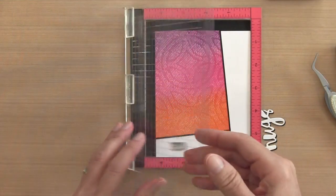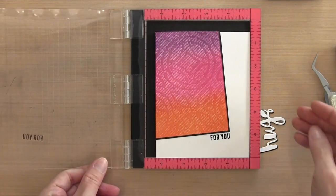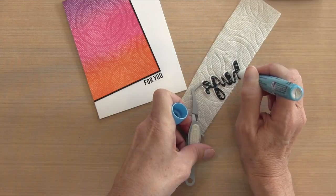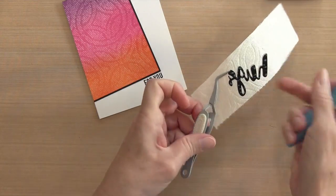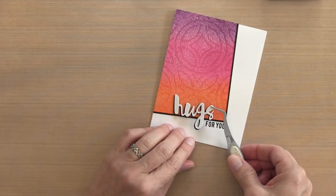So I'm going to pull 'for you' from this Bejeweled set and I'm going to use my Misti to make sure I get it lined up right at the edge of my panel. And I'm just stamping it with some Hero Arts black ink.